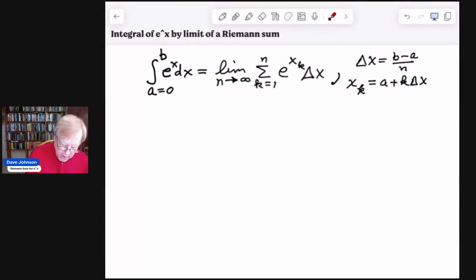So I've written down the Riemann sum for the integral e to the x dx. I'm using a, the lower limit, to be zero because that makes it easier. And it turns out it's very simple to generalize this to any a. So, the limit as n goes to infinity of the summation as k goes from 1 to n of e to the x sub k times your delta x, where delta x is b minus a divided by n.